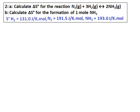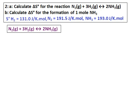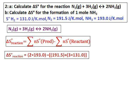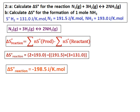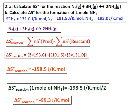Calculate delta S0 for the reaction: nitrogen plus hydrogen giving ammonia. Part B: calculate delta S for the formation of one mole of ammonia. Standard entropy values for hydrogen, nitrogen, and ammonia are given. Using delta S equals sum of entropy of products minus reactants, substituting the values gives delta S0 of the reaction as negative 198.5 joules per Kelvin mole. For one mole of ammonia, since the reaction is for two moles, divide by two to get the entropy change for one mole.